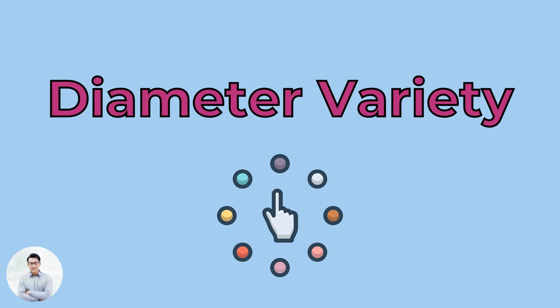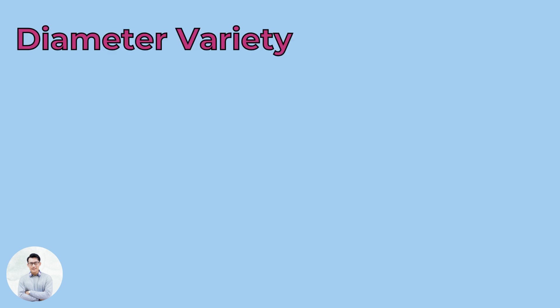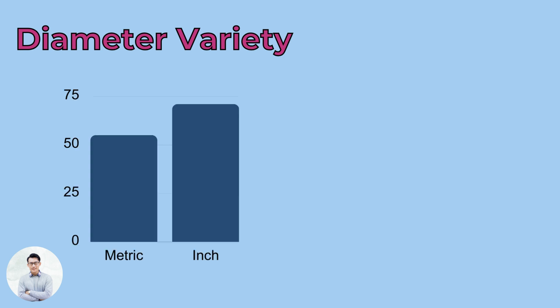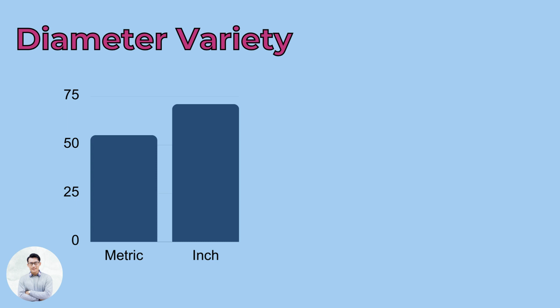Variety of Diameters. If we take a closer look at the range of diameters shared by both standards, 1.5 to 150 mm, we can see that inch threads have 71 listed diameters, while the metric standard has only 55, almost 50% more. If the needed size is not available in the metric system, it is better to use an inch thread than a special metric thread.